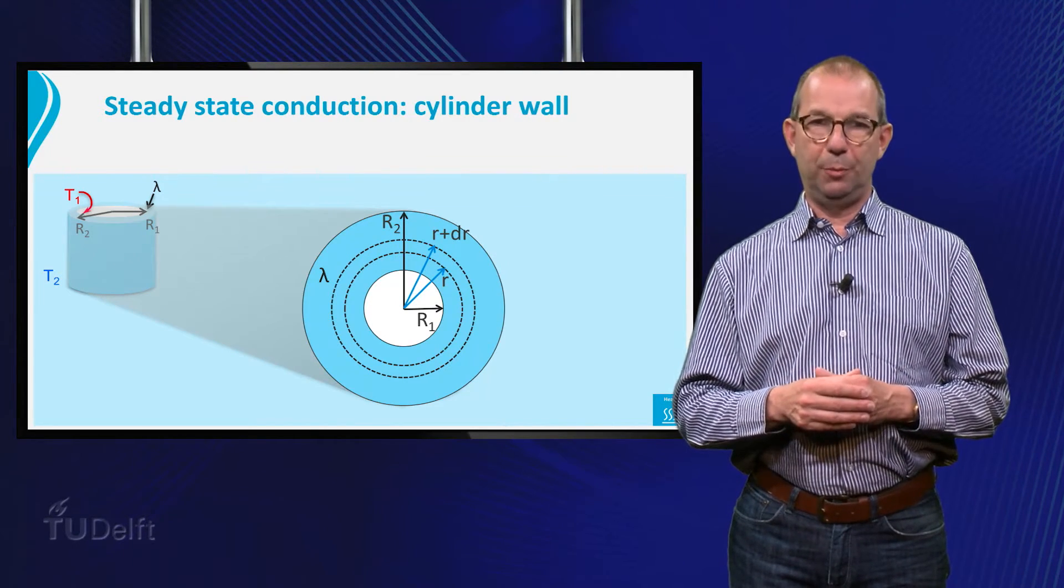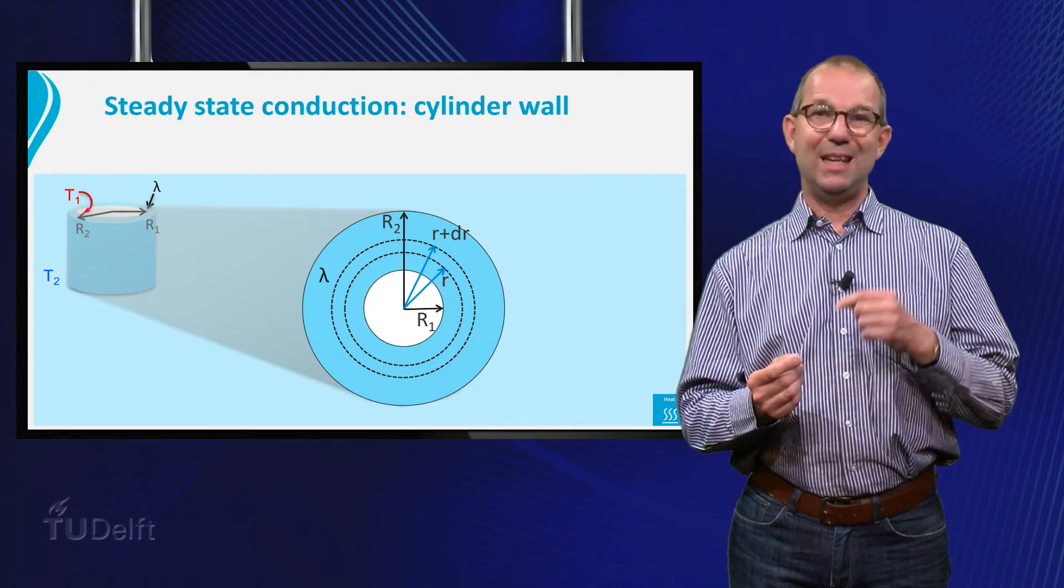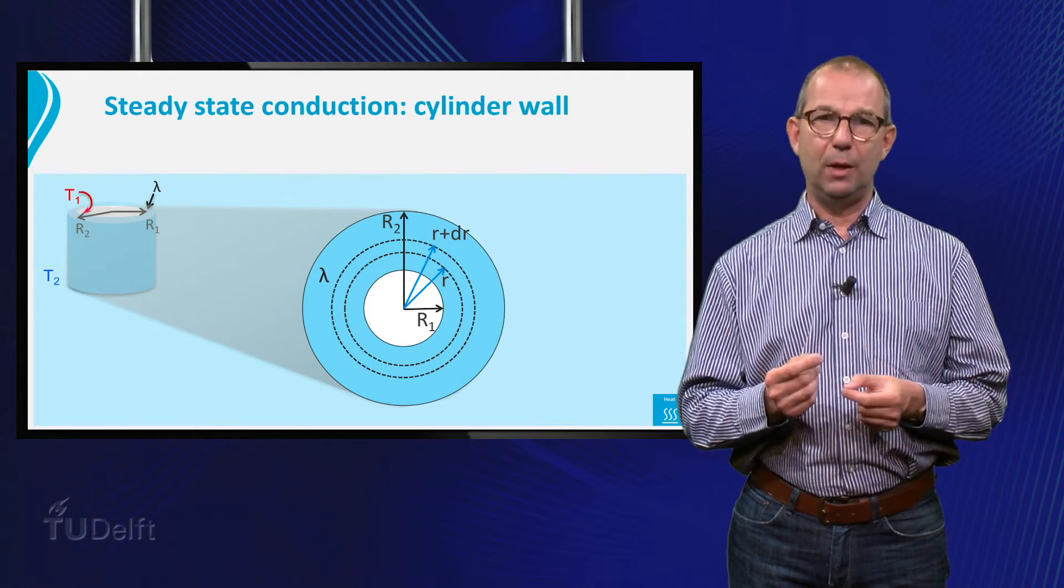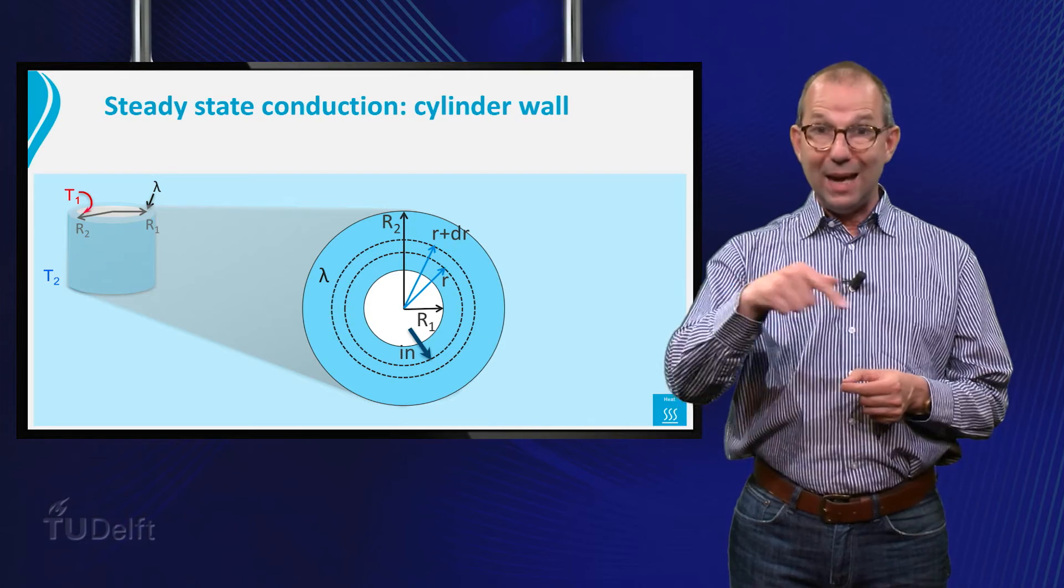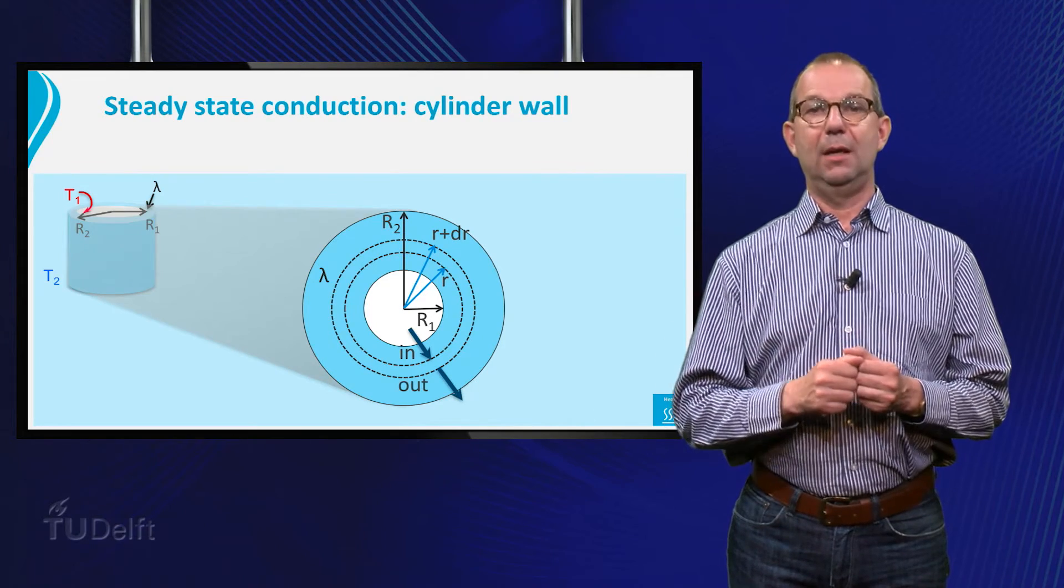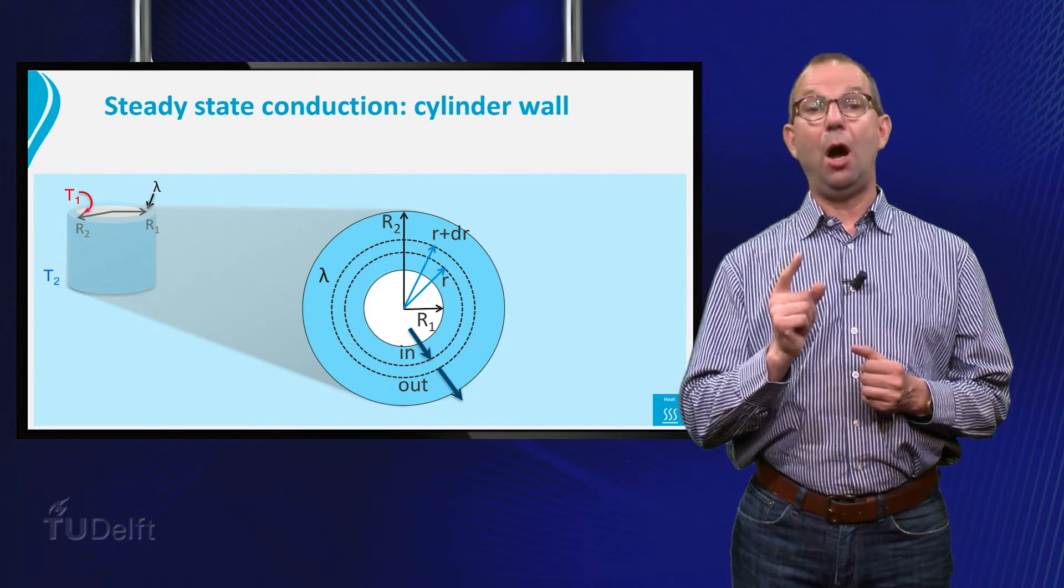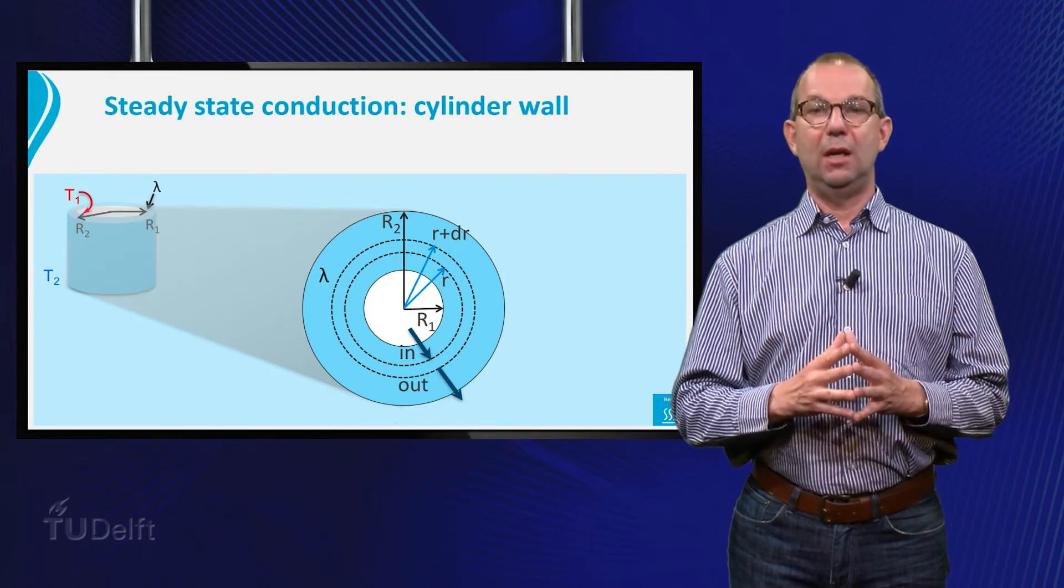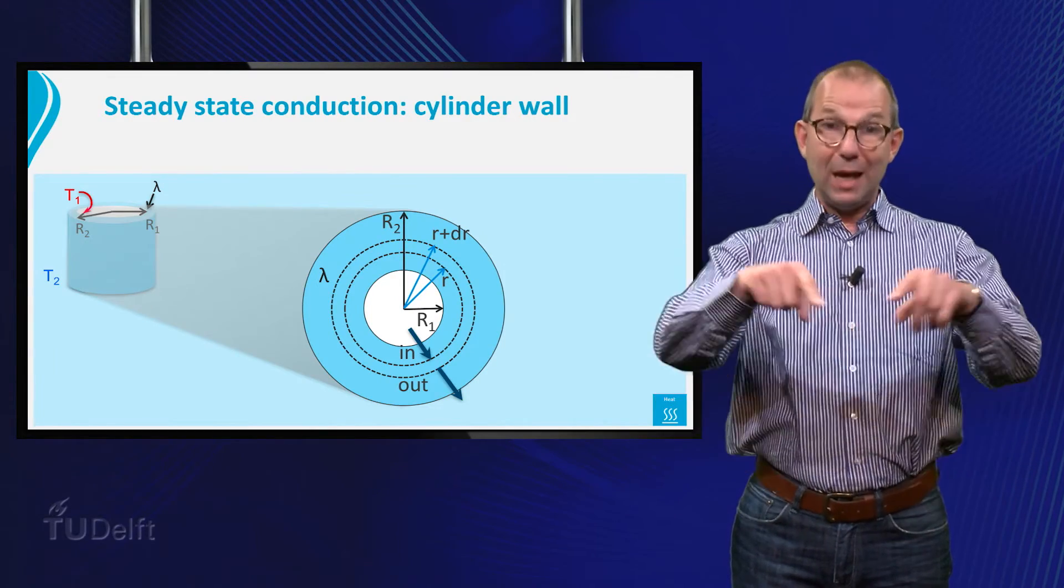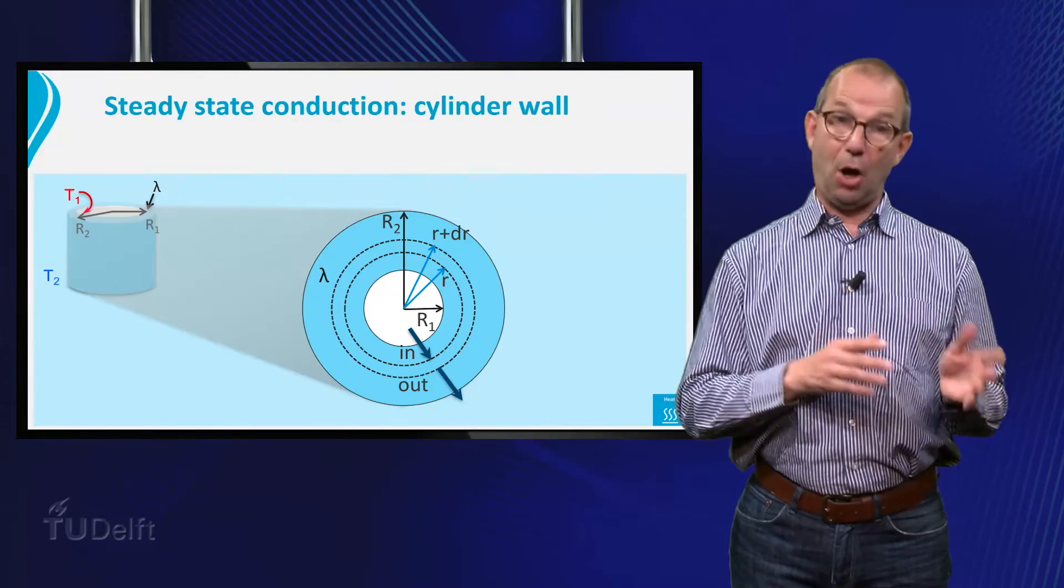As the inner wall of the blue ring is hotter than the outer wall, heat will flow into our control volume at the inner dashed line, that is at radius r. Likewise, heat will flow out through the outer dashed ring at r plus dr.